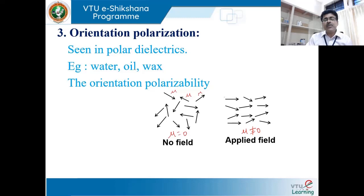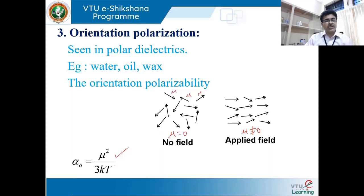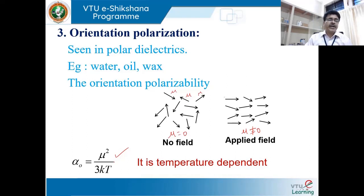The coefficient of orientational polarizability is given by: α₀ = μ² / (3kT), where μ is the dipole moment, k is the Boltzmann constant, and T is the absolute temperature. Therefore, orientational polarization is temperature dependent — it is inversely proportional to temperature.